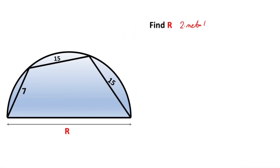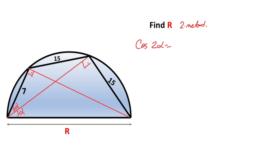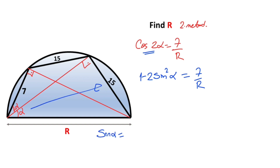This was the first method. Now we calculate r using the second method. Connecting these corners, we know the angles are alpha and here is 90 degrees. Connecting these two corners gives another 90 degree angle. From the figure, cosine of 2alpha equals 7 over r. We also know that cosine 2alpha expands to 1 minus 2 times sine squared alpha. And sine alpha equals 15 over r.